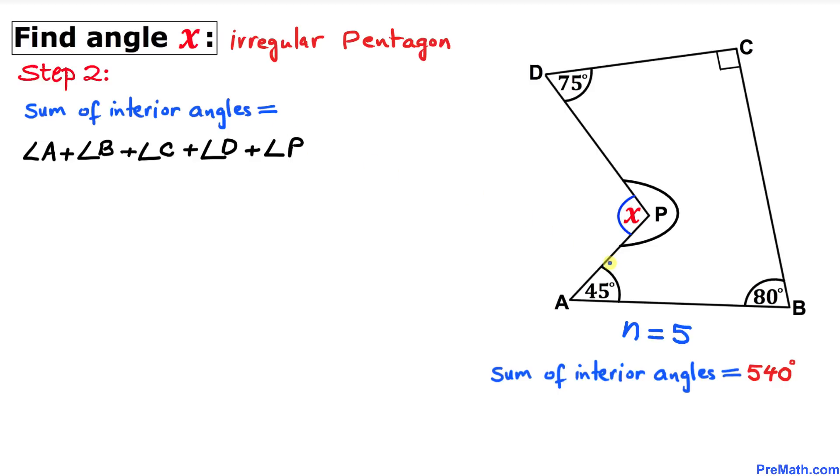We're going to take the sum of angle A plus angle B plus angle C plus angle D plus angle P. That's 45 degrees plus 80 degrees plus 90 degrees plus 75 degrees plus angle P. We don't know angle P, so that equals 290 degrees plus angle P. We know the sum of interior angles is 540 degrees.